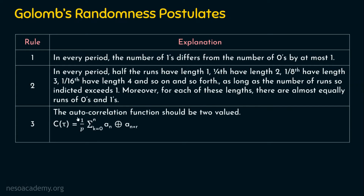Rule number 3: the autocorrelation function should be two-valued. C(τ) = (1/P) × summation from k=0 to n of A(n) XOR A(n+τ), and this value of C(τ) should be two-valued. When we solve an example, we will see that the last column while calculating C(τ) will have only two values.